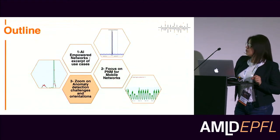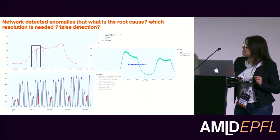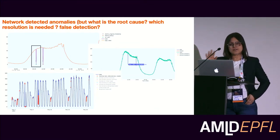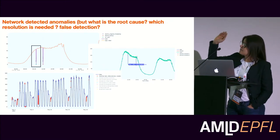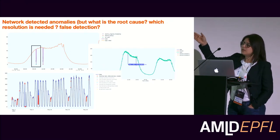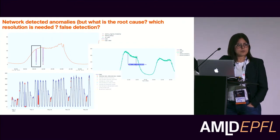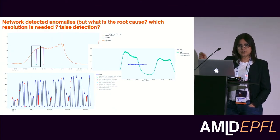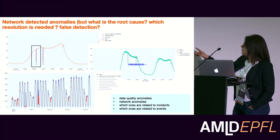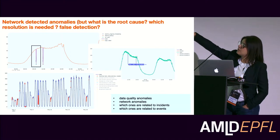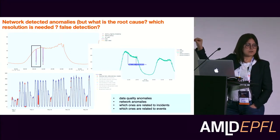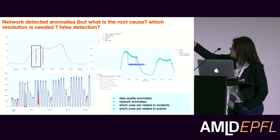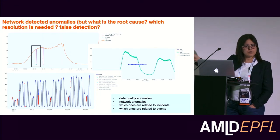Moving to the zoom on anomaly detection — everyone can detect anomalies; there are lots of open-source models you can configure to detect anomalies. But are these anomalies important for the operational teams? Are they related to some events, or coming from data quality issues? That's the tricky part. For example, the first type of anomaly here is a problem from data collection — a data quality issue. The other anomalies are happening at the device VoLTE part, detected through ensemble learning combining Prophet with evolving moving average. It works well, but we still have a lot of false positives.